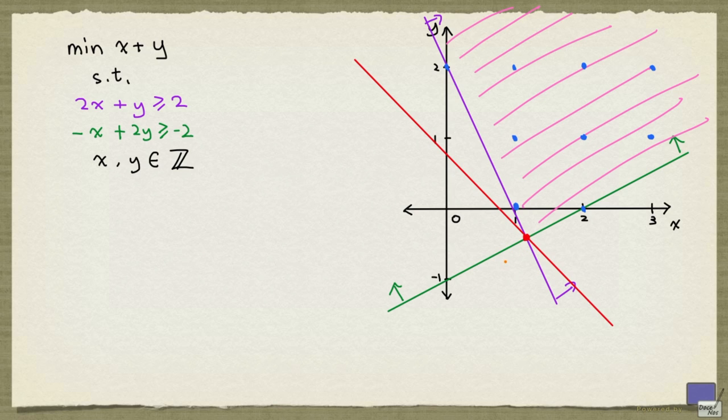We can work out what this point is. So it's the intersection of the two lines, 2x plus y equals 2 and minus x plus 2y equals minus 2. And if you work this out, you'll get the point 6 over 5 and minus 2 over 5.